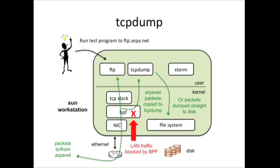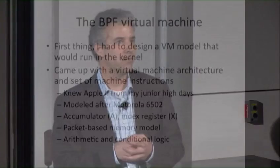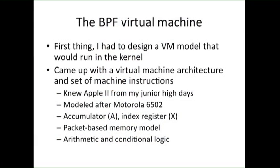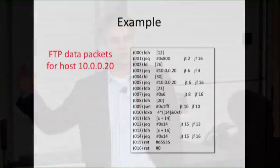TCPdump could then display packets for the user or save them straight to the file system for later analysis. To build this, the first thing I needed to do was design a virtual machine model that would run in the kernel and execute these filters. I wanted to keep it simple. I had experience from my junior high days writing machine code for the Apple II, which was based on the Motorola 6502, so I modeled the virtual machine architecture after the 6502. It would have an accumulator, an index register. The memory model would be based on packets, with load instructions that would load information from packets into the accumulator, and then you'd do arithmetic and conditional logic on the data loaded into the registers.